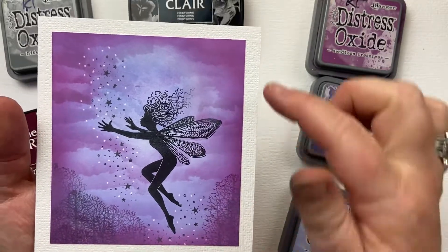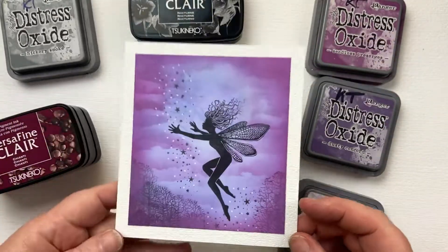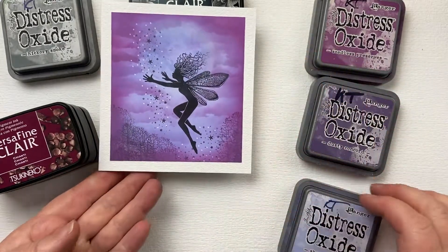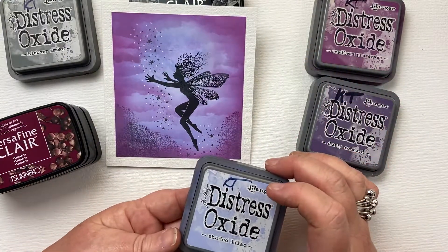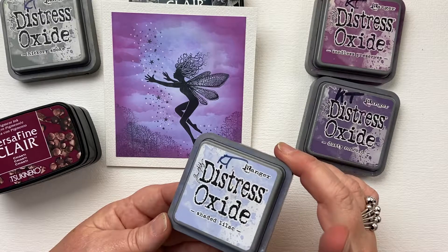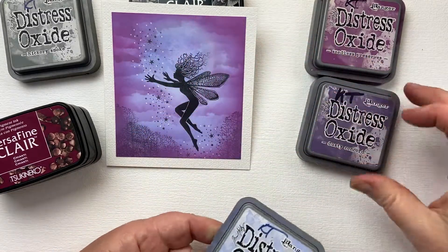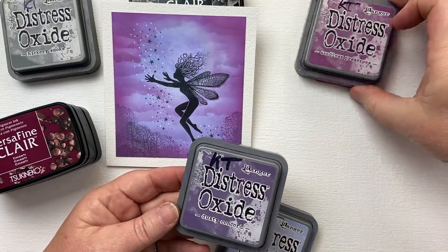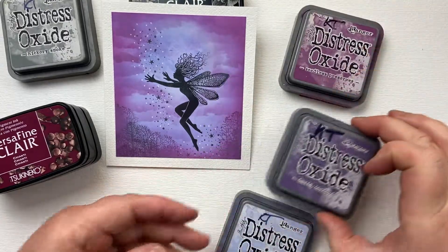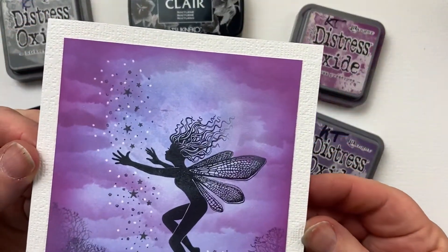It's 12cm by 12cm. I'm using Distress Oxides for the backgrounds but you can use inks just as well. Colors that I'm using: Shaded Lilac for the overall background, Dusty Concord and Seedless Preserve give us the texture in the clouds.